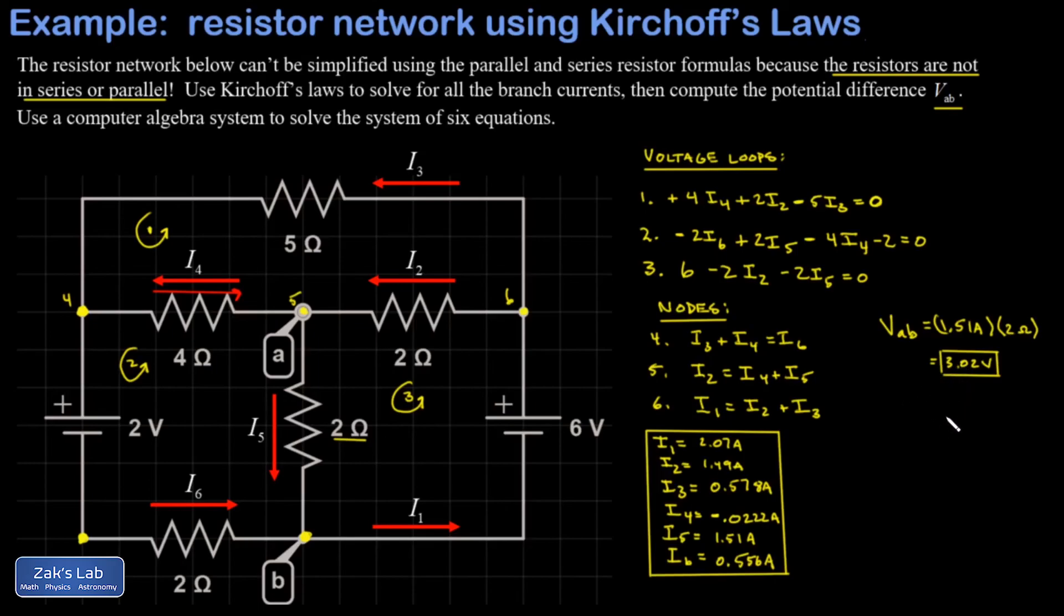So in the lab, I can test this by just putting the multimeter probes at these two junctions in the circuit. And it should get very close to 3 volts.